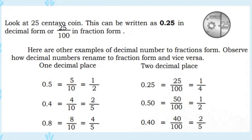Here are more examples. Look at this 25 centavo coin. This can be written as 0.25 in decimal form, or 25 hundredths, and 25 over 100 in fraction form.